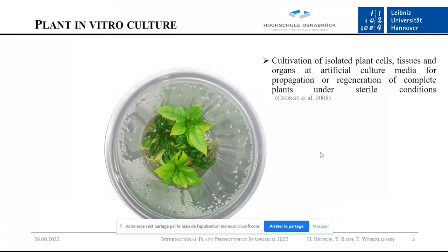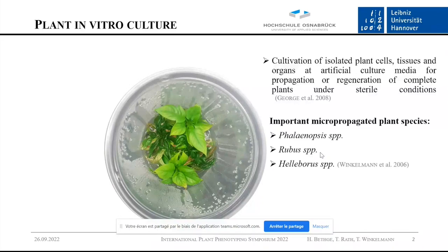You probably are not all familiar with plant in vitro culture, so here's a definition. It's the cultivation of isolated plant cells, tissue or organs in artificial culture media for propagation or regeneration under sterile conditions. Commercially important micro-propagated plant species include Phalaenopsis, Rubus, and Helleborus.